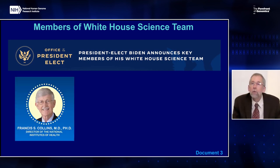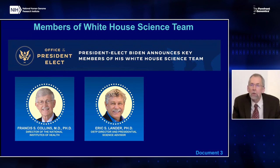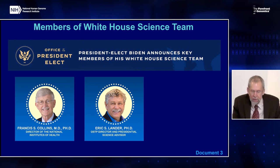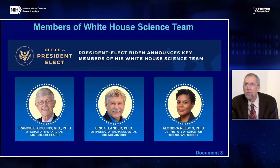Francis Collins will continue in his role as NIH director. Eric Lander, well known to NHGRI and the entire genomics community, will serve as President Biden's science advisor and director of the White House Office of Science and Technology Policy, or OSTP. President Biden is elevating the role of the science advisor within the White House, designating the presidential science advisor as a member of the cabinet for the first time in history. Alondra Nelson, who recently served on the Genomics and Society Working Group of this council, will serve as OSTP deputy director for science and society.